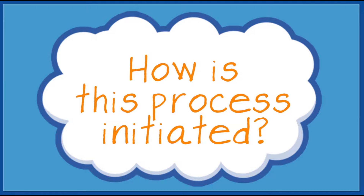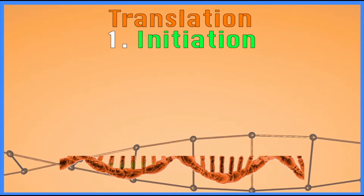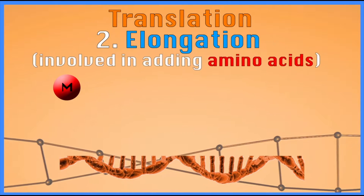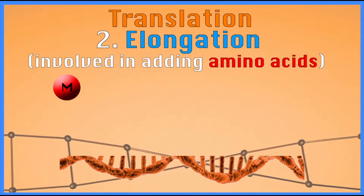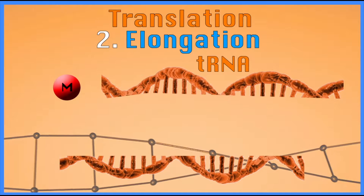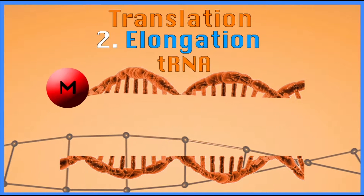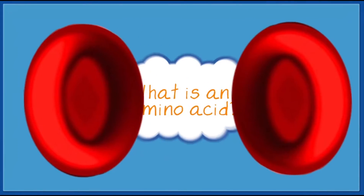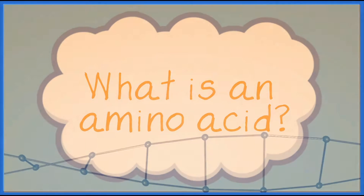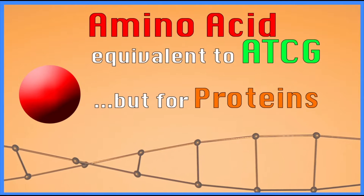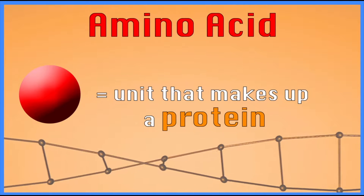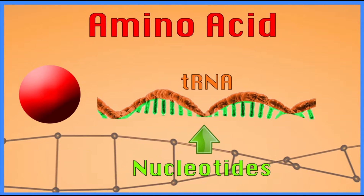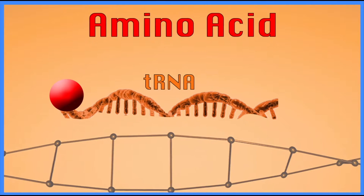How is this process initiated? Translation initiates at the AUG, so the first amino acid added is methionine. Then there's the elongation phase, which is basically adding all the other amino acids. One of those specialized RNAs we talked about is the tRNA — the transfer RNA. Its job is to grab onto an amino acid and bring it in, matching whatever the RNA sequence is. An amino acid is the equivalent of A, T, C, and G, but for proteins — it's the unit that makes up a protein or polypeptide chain. The tRNA has nucleotides on one side that match up with the RNA, and on the other side it holds an amino acid, so it links the two together.